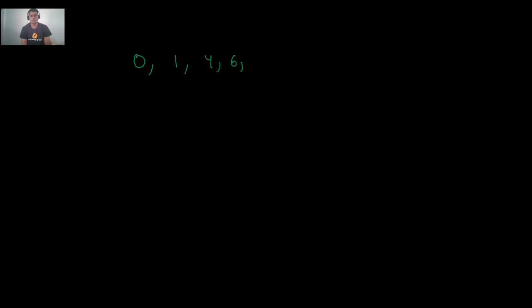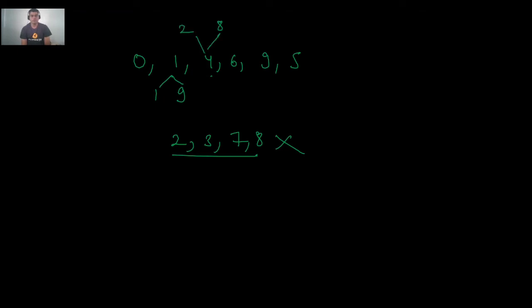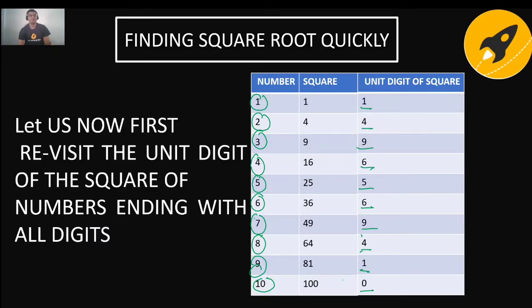A perfect square can only end with 0, 1, 4, 5, 6, or 9 — never with 2, 3, 7, or 8. For example: 1 × 1 = 1, 9 × 9 ends in 1; 4 ends with 2 or 8 (since 4² = 16 and 6² = 36); 3² = 9 and 7² = 49 both end in 9; 5² ends in 5. So if a number ends with 2, 3, 7, or 8, it is never a perfect square.